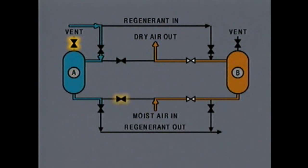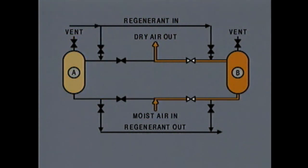This vent valve and this moist air inlet valve are opened to allow moist air to purge the regenerant from dryer A. Then the valves are closed. Dryer A is now ready to be returned to service. Successfully rerouting flows while a system is operating depends on knowing exactly which valves have to be repositioned and in what order. Using a flow diagram can make the job easier.